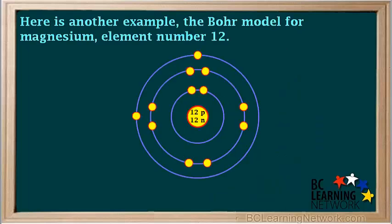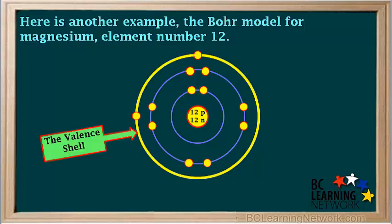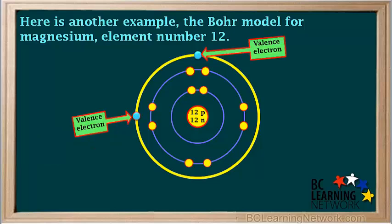Here's another example: the Bohr model for magnesium, element number 12. Its outermost occupied shell, or valence shell, is shell number three, as shown by the yellow circle. And the two valence electrons in a magnesium atom are shown by the two small blue circles in the valence shell.